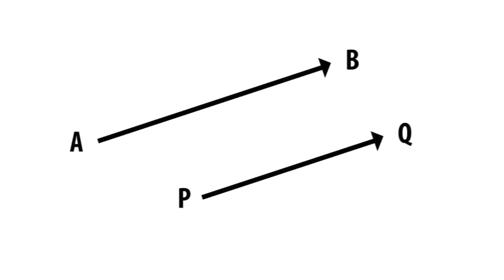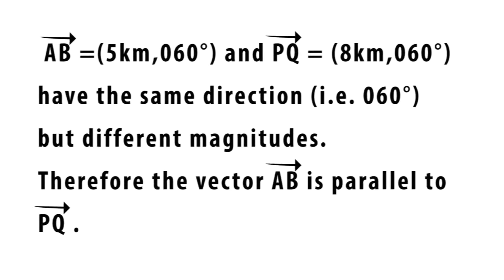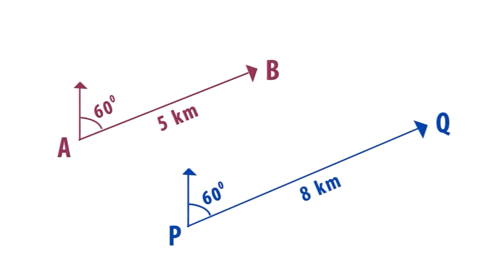Now, let's turn our attention to parallel vectors. When two vectors are parallel, it means that they have the same direction. Two vectors are parallel when they have the same direction. For example, if we have the vector AB to be equal to 5 kilometers, 60 degrees, and the vector PQ is equal to 8 kilometers, 60 degrees. Since these two vectors have the same direction, that is 60 degrees, we will say that these vectors are parallel. The difference here is that with equal vectors, they must have the same magnitude in the same direction. But for parallel vectors, they just have to have the same direction.